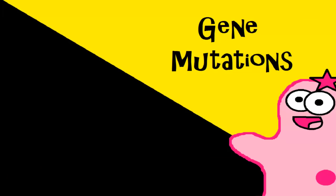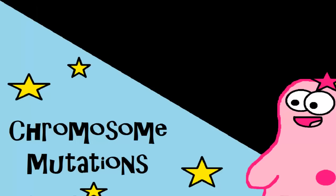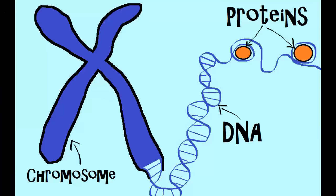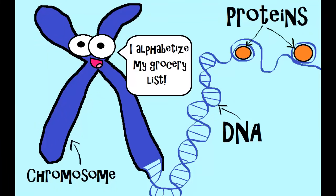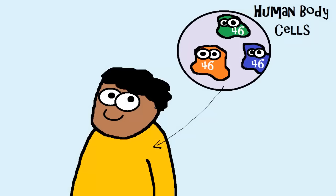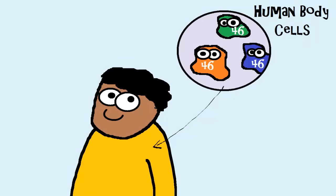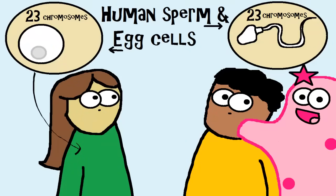Those were all types of gene mutations, but we also have chromosome mutations. Remember that chromosomes are made up of DNA and protein — they're highly organized and have a lot of genes on them. All of the body cells in your body have 46 chromosomes, while human sperm and egg cells have 23 chromosomes. Changes can occur at that large chromosome scale too.